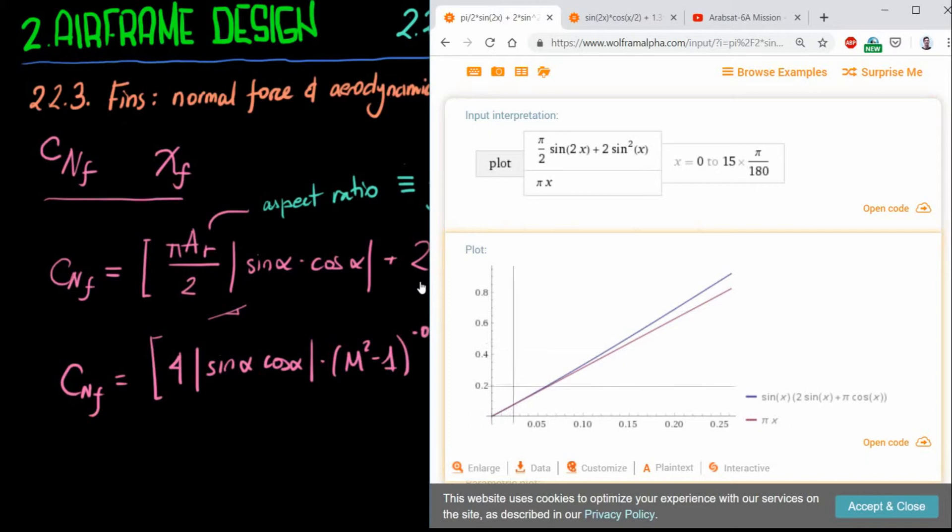You usually don't get such high angles of attack. You can destabilize the rocket at angles like that. That's why I'm only plotting 0 to 15 degrees. It's practically linear if you compare with a line. By the way, I used an aspect ratio of 2, which is in the range of common fins. This is practically a line. It has a little bit more normal force, but yeah.